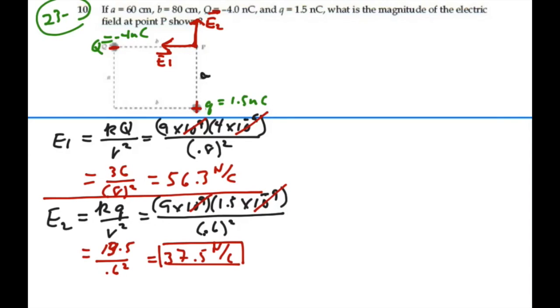All right, so we have these two vectors. And it's looking something like this, where E1 is 56.3 newtons per coulombs in the negative x direction, and E2 is 37.5 newtons per coulombs in the positive y direction.